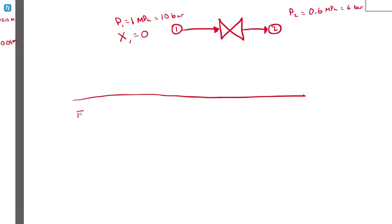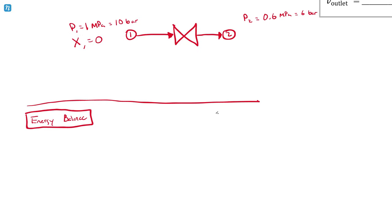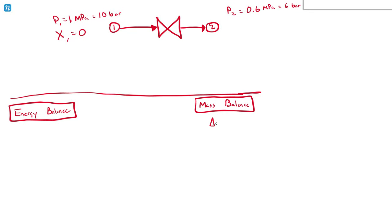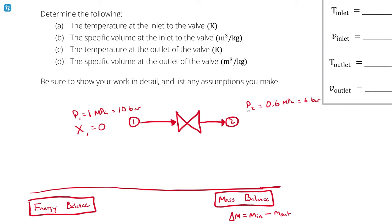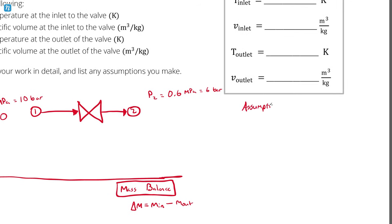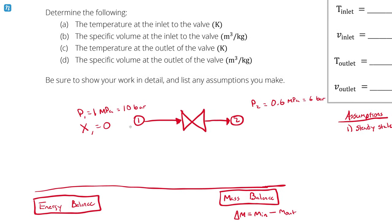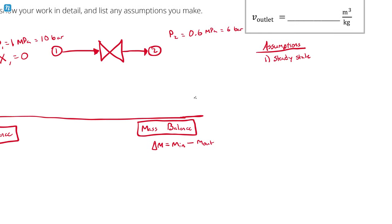So the best practice here would be to do an energy balance and a mass balance. My mass balance will be shorter so let's start with that. Change in mass inside my expansion valve is the mass entering minus the mass exiting. And I'm going to have to consider that this expansion valve can't really accumulate mass, so it's reasonable to assume my mass just goes from inlet to outlet. I'm going to say this is steady state.